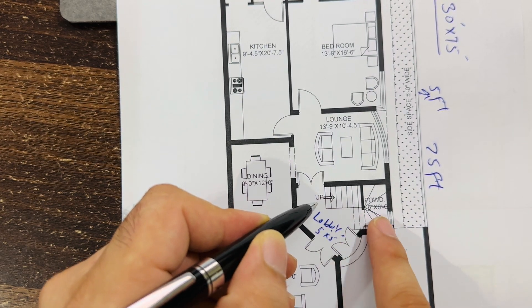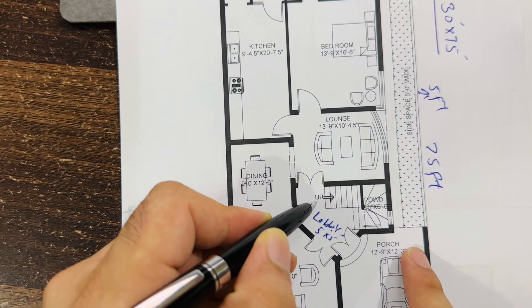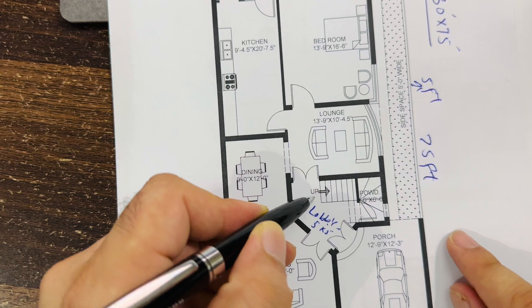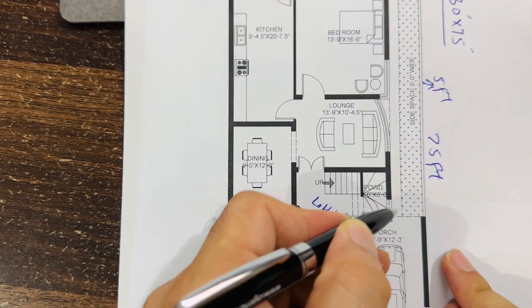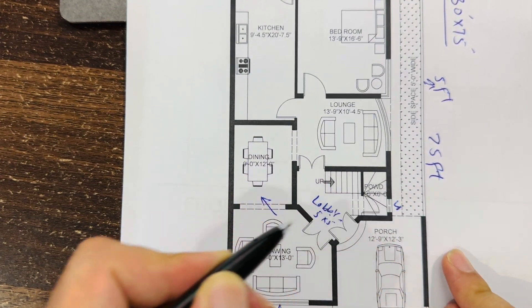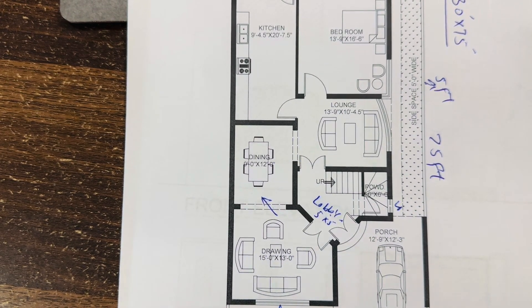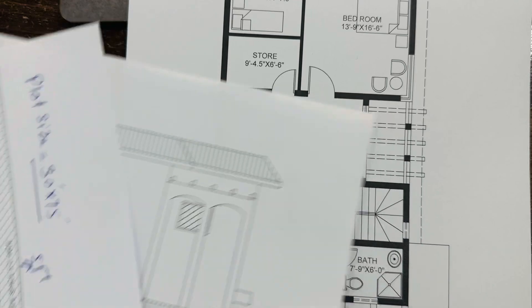Under the stair we have a powder room; its size is 4 feet 6 inches by 6 feet 6 inches. At the right side there is a ventilation window especially for this powder room, and you can see the first floor is here.